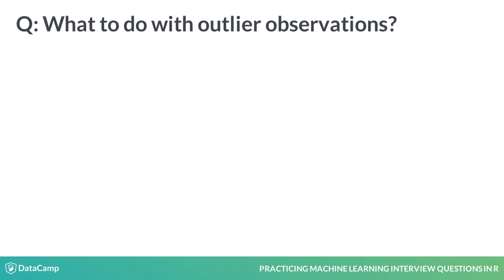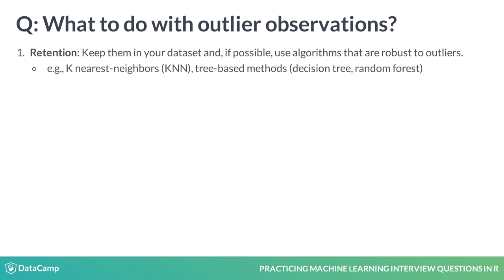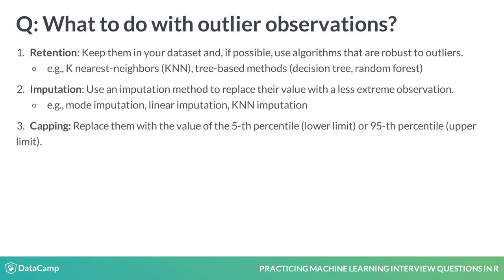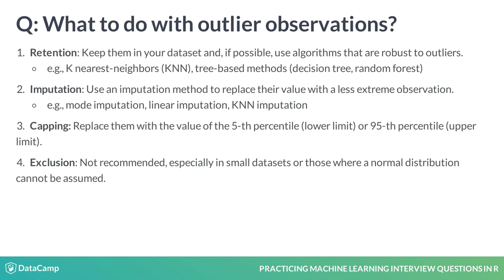After detecting the outliers, we can proceed in several ways. First, try to retain them in your data by choosing algorithms that are robust to them. If this is not possible, you could try applying data imputation methods such as linear or KNN imputation, which will hopefully replace the outliers with less extreme observations. Another option is capping the outliers by replacing the low values with the fifth percentile of the variable distribution and the high values with the 95th percentile. Excluding the outlier observations from your data analysis pipeline is also possible, although this is often frowned upon and definitely not recommended for small data sets or those whose distribution is not Gaussian. In any case, use your domain knowledge to understand why these extreme observations are happening in your data set.